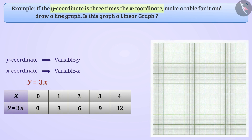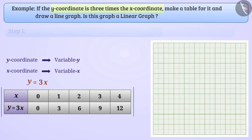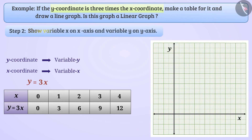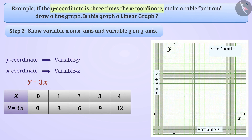Step 1: We will draw the horizontal x-axis and vertical y-axis on the squared paper. Step 2: We will show variable x on the x-axis and variable y on the y-axis. The scale for the x-axis will be 1 unit = 1, and the scale for the y-axis will be 1 unit = 3. The largest value of y is 12, so we will take up to 15 numbers on the y-axis.